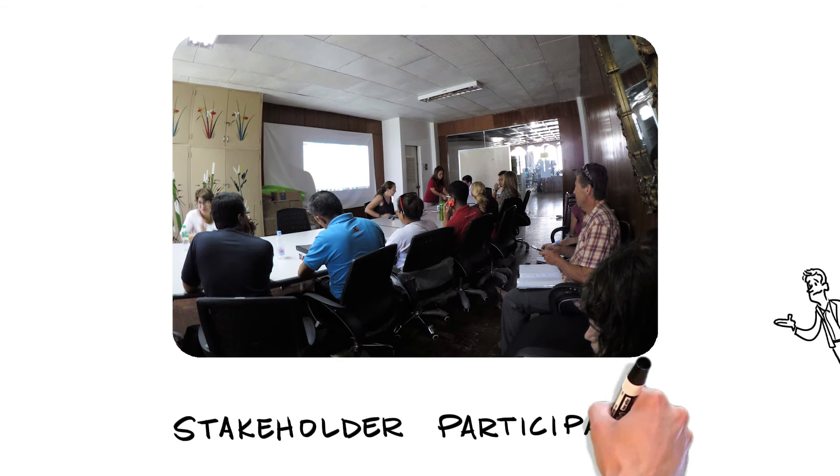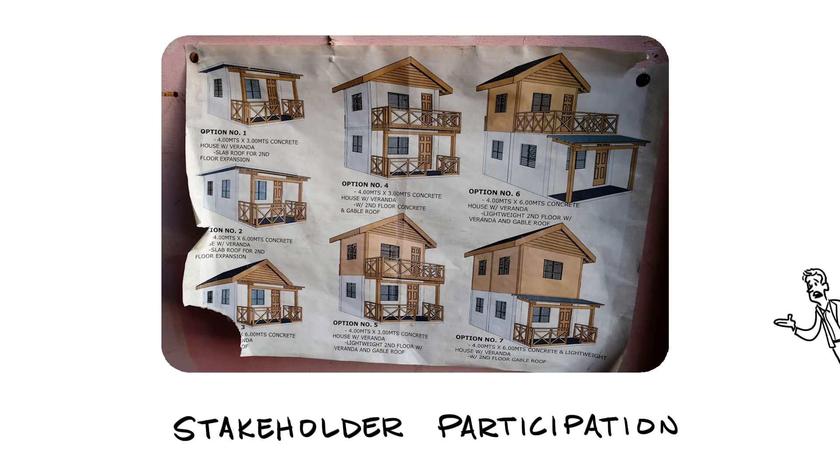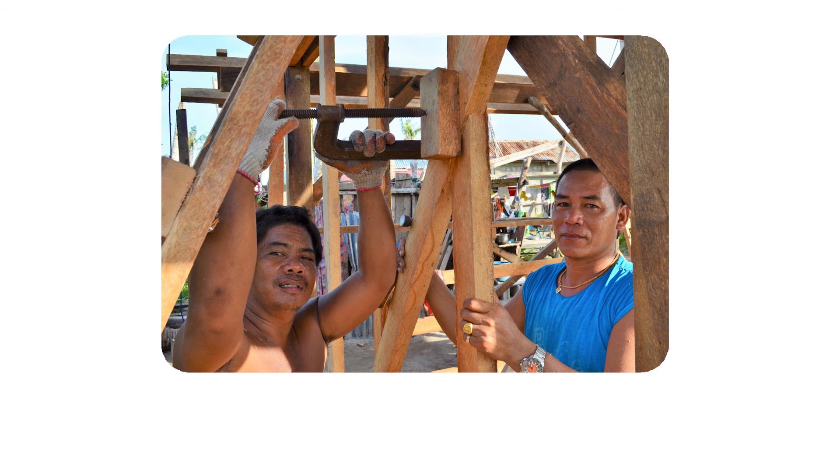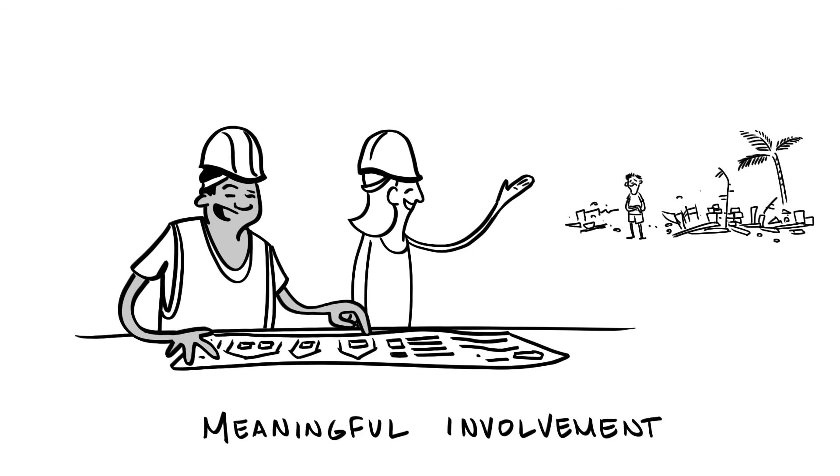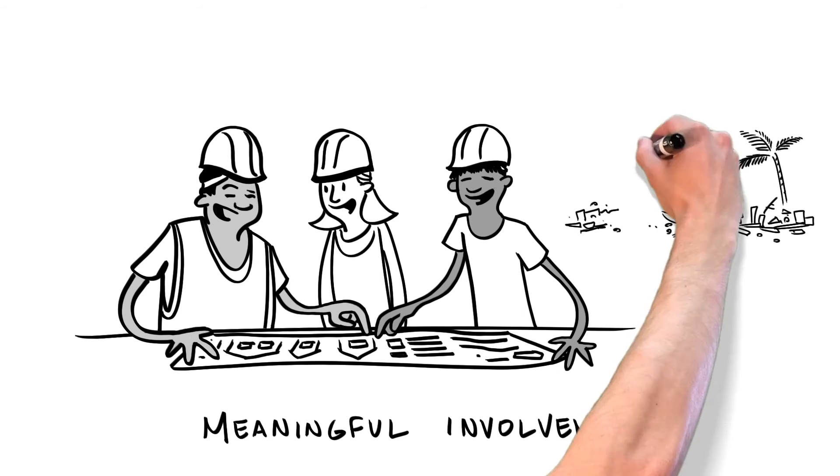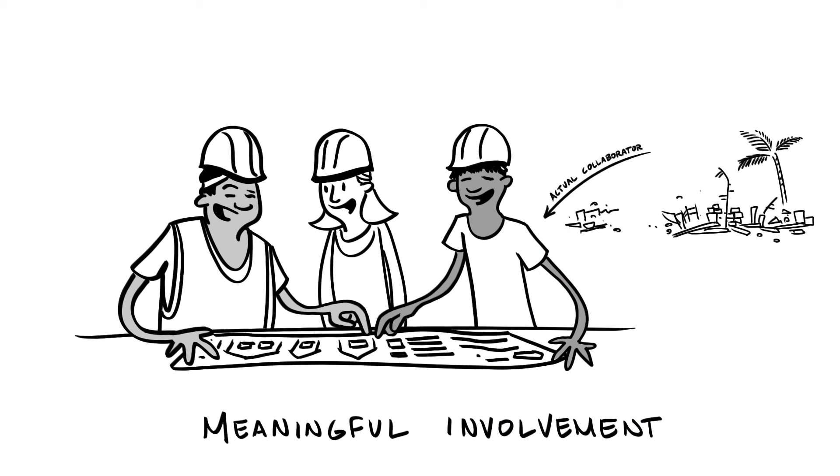Second, we tend to think of stakeholder participation as more of an outcome, a box to check when local citizens are adequately informed or merely allowed to attend public meetings. But we found stakeholder participation to be much more effective when it entailed meaningful involvement throughout the reconstruction planning process. Especially in the early phases of planning, like when reconstruction needs are prioritized and building sites are identified. This involved local citizens who were actual collaborators in housing project designs, not just seen as obligations that were entitled to information after decisions were already made.